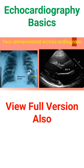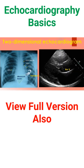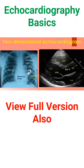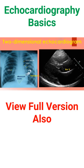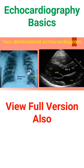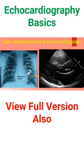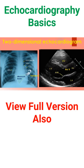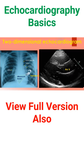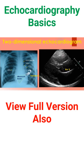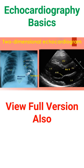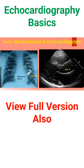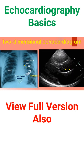During echocardiography, a transducer transmits the ultrasound beam towards the heart. Echoes received by the transducer from various structures of the heart are analysed by the echocardiograph and a graphical representation is displayed on the monitor. The location of the transducer is at the top of the image sector. Structures nearer to the transducer are shown at the top of the image, and those away from the transducer at the bottom of the image.